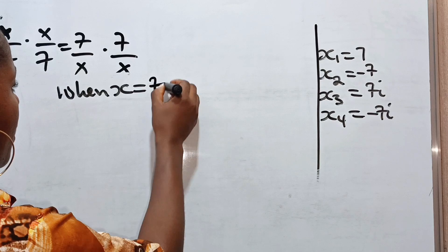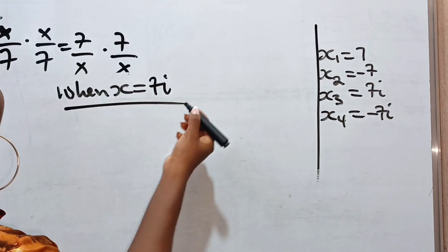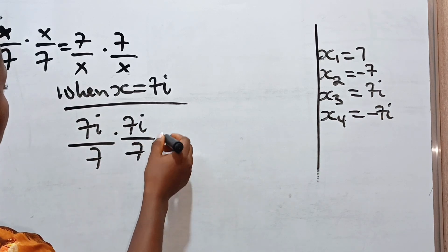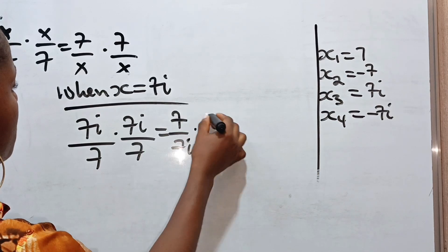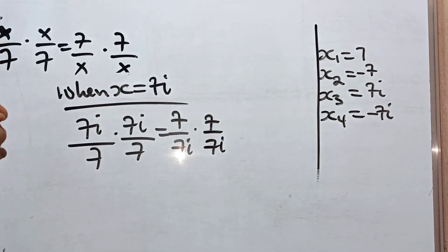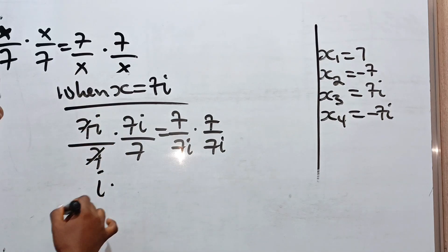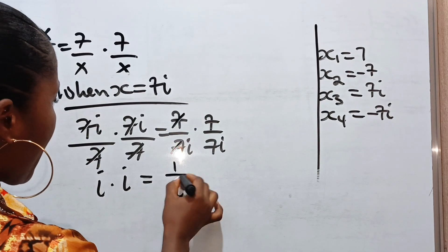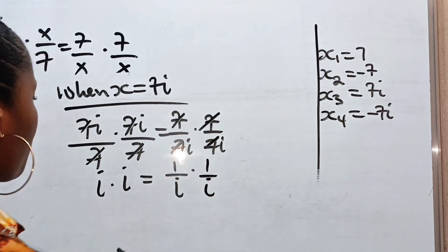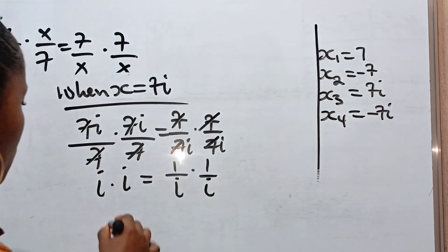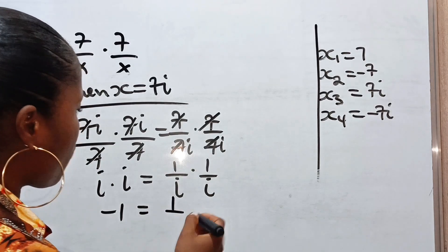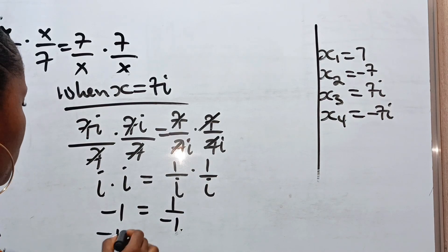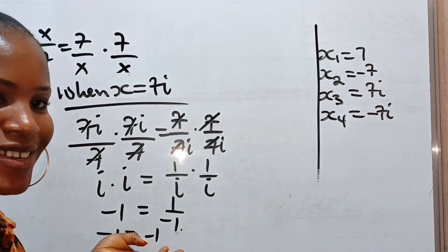When x is 7i, we have 7i divided by 7 multiplied by 7i divided by 7 is equal to 7 over 7i multiplied by 7 over 7i. The 7s cancel, leaving i times i on the left, and 1 over i times 1 over i on the right. Since i multiplied by i is minus 1, and 1 over i times 1 over i is also 1 over minus 1, we have minus 1 equals minus 1. This proves the answer is correct.